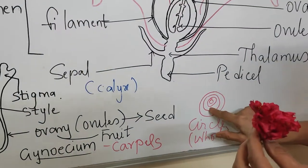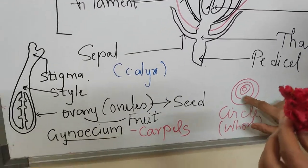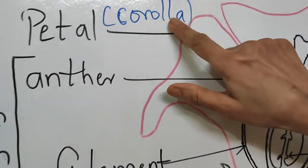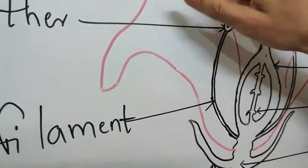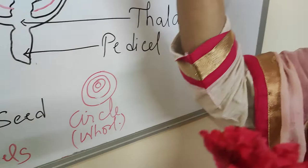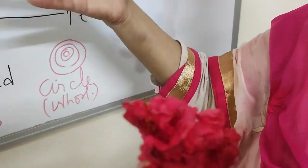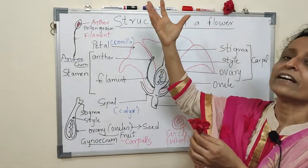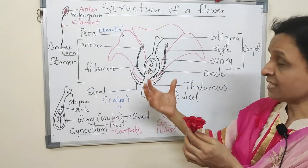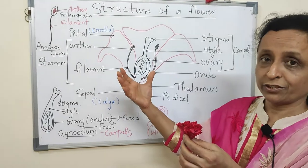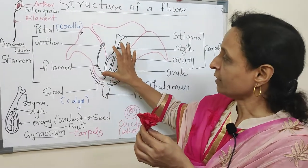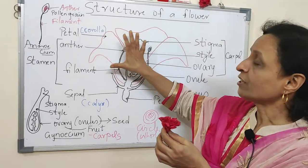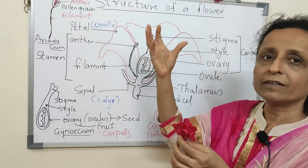Above the sepals, the outer whorl is calyx. Next will be corolla. The petals which you can see are known as corolla. They might be red, yellow, pink, or purple. Corolla is to attract insects for pollination. So these are the non-reproductive structures — they are not actually doing reproduction.